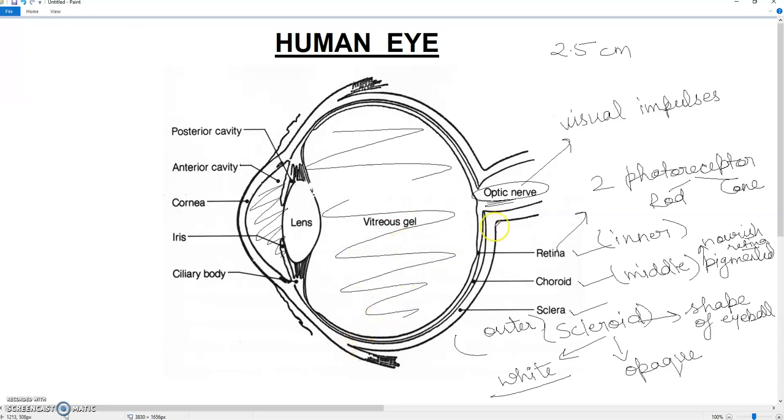This is a big area of space called vitreous humor. Vitreous gel is also known as vitreous chamber. The liquid filled is aqueous humor in the aqueous chamber.